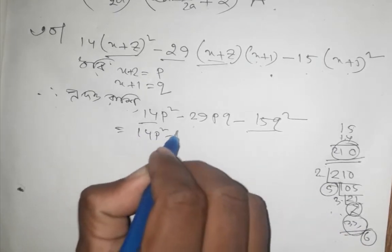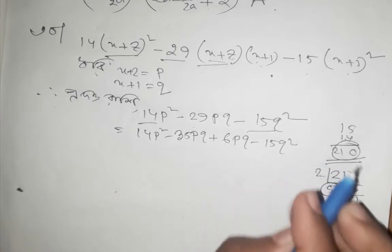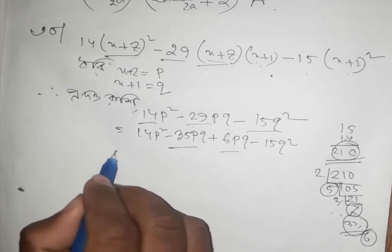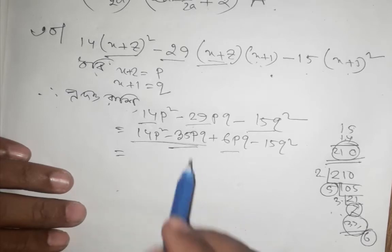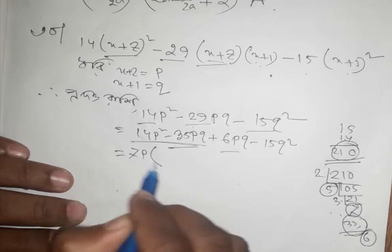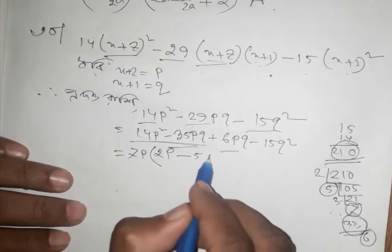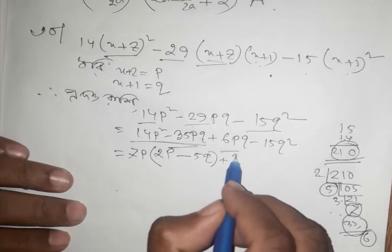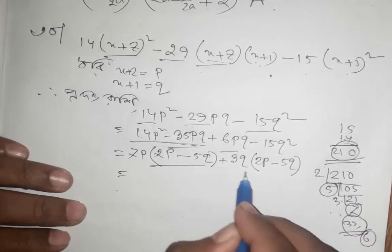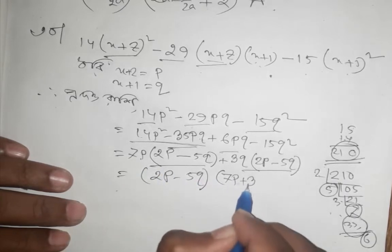14p squared minus 35pq plus 6pq minus 15q squared. What is common? The relation is: 7p is common giving 2p minus 5q, and 3q is common giving 2p minus 5q. So we get 2p minus 5q, times 7p plus 3q.